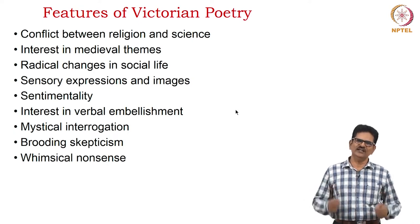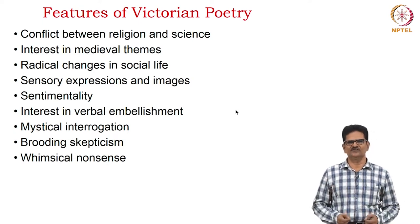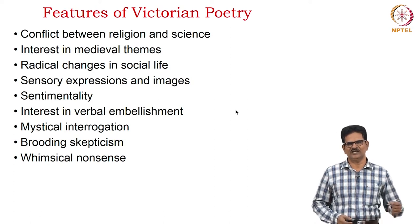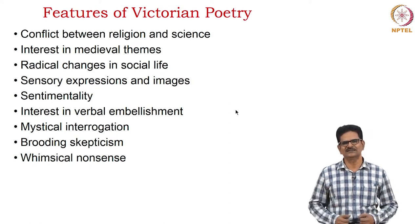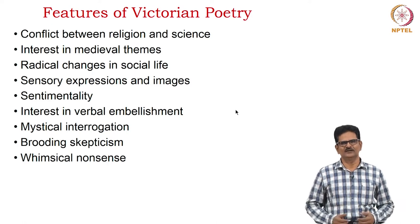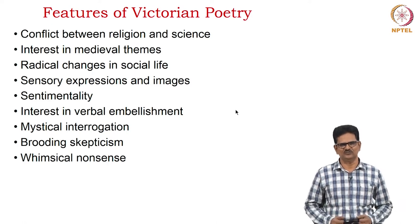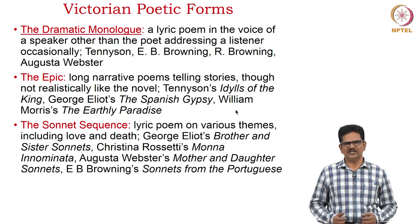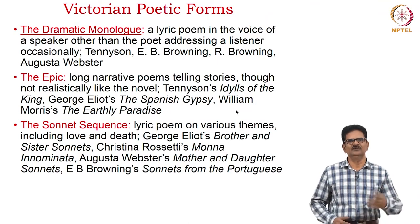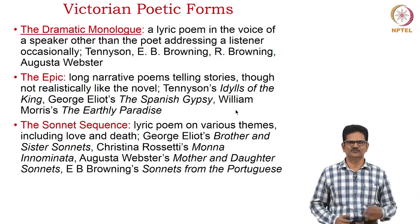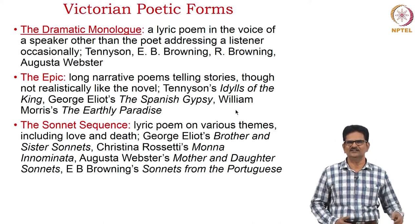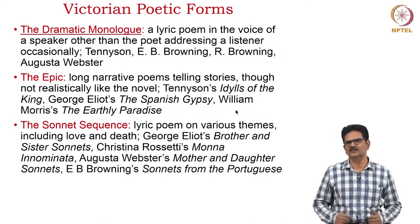We have a very curious case of nonsense poetry at this time, which is why we mention the whimsical and nonsensical. We will have some examples for nonsense poetry as well. Let's see the Victorian poetic forms — there were many, but we will look at three: the dramatic monologue, the epic, and the sonnet sequence.